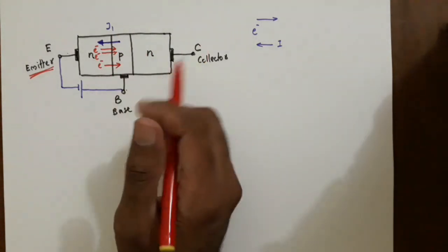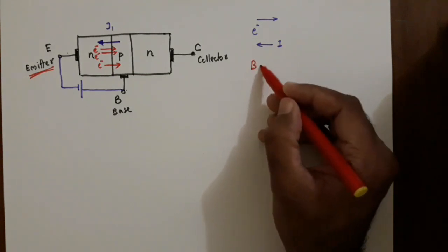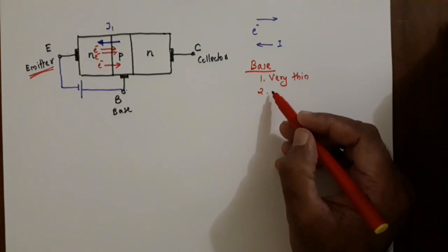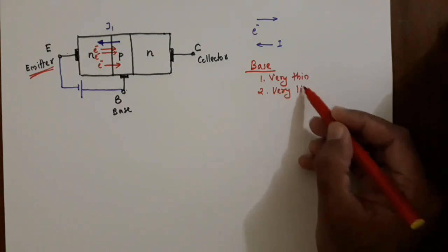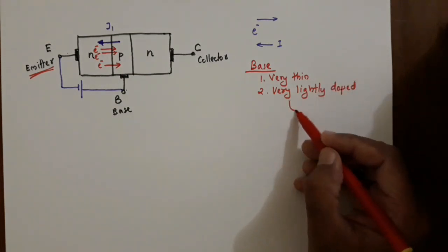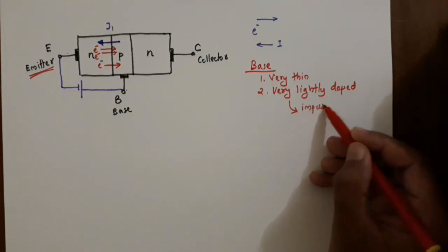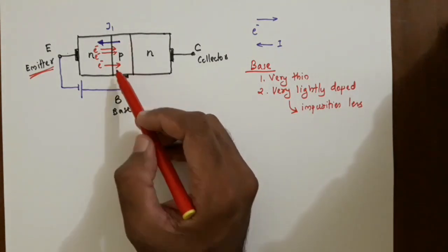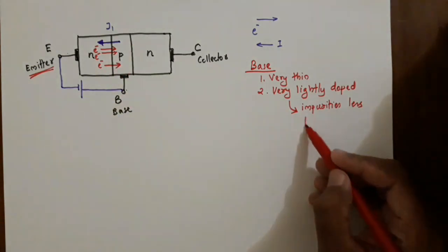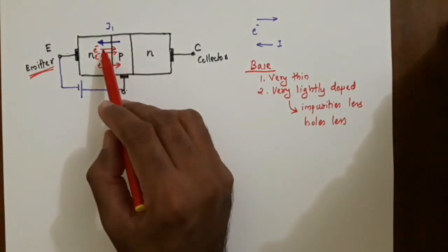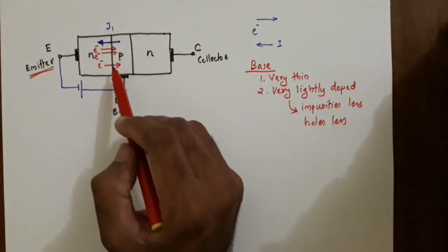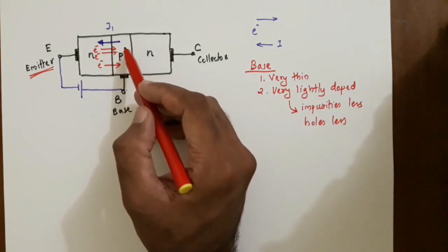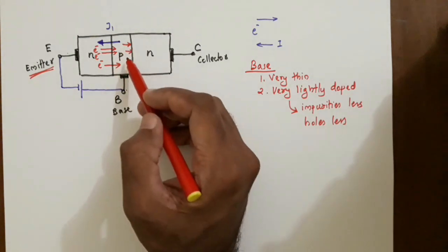There is a constructional feature which ensures this transistor configuration: the base is made very thin and the base is very lightly doped. When the base is very lightly doped, the impurity concentration is less, so the majority carriers in the P-type base region — which are holes — will be fewer. A large number of electrons cross this junction and reach the base region, but there are not sufficient holes for recombination.